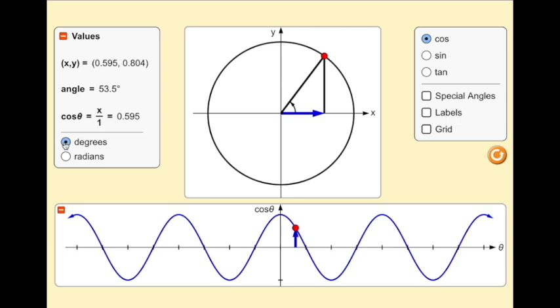The area on the bottom of the screen shows the graph position of the red dot on the cosine function.